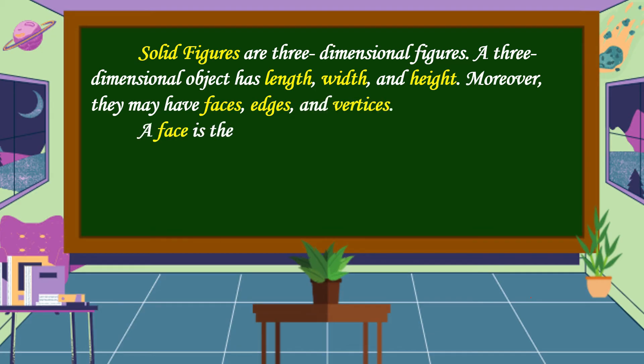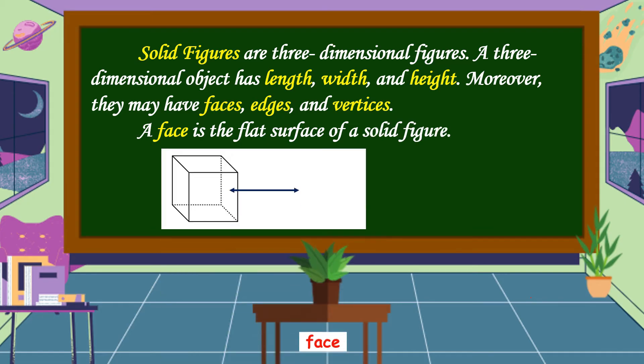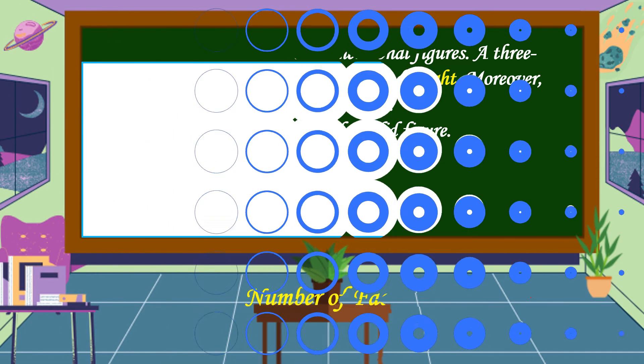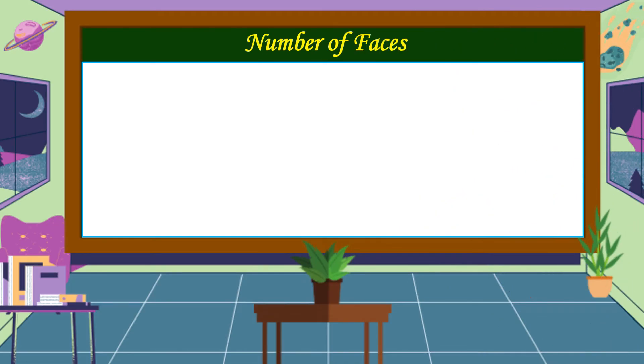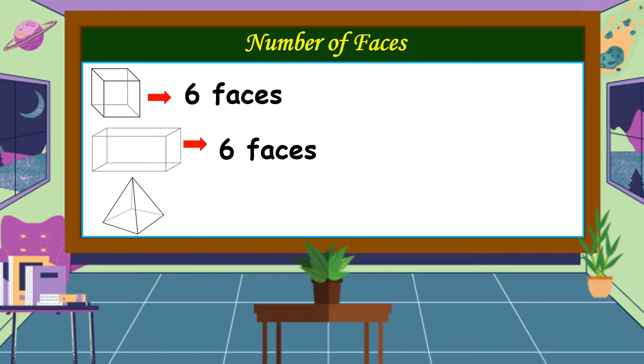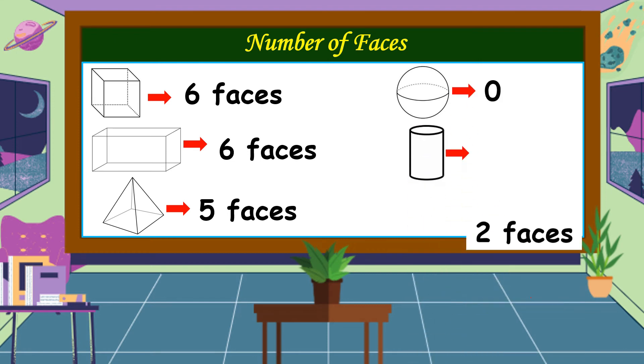A face is the flat surface of a solid figure. This is the face. Let's count the number of faces of some solid figures. A cube has six faces, a rectangular prism has six faces too, a pyramid has five faces, a sphere is zero, a cylinder has two faces, and a cone has one face.